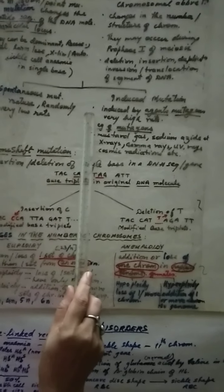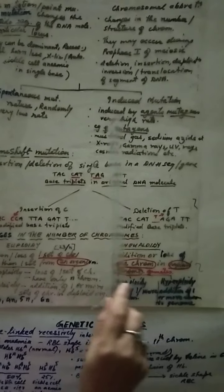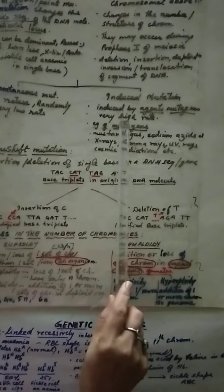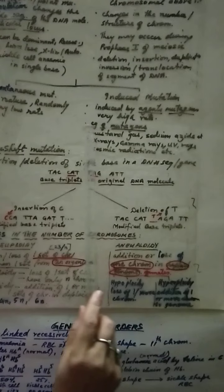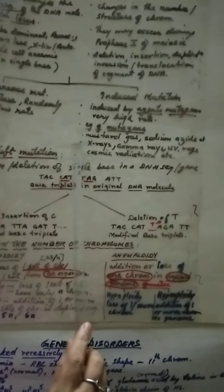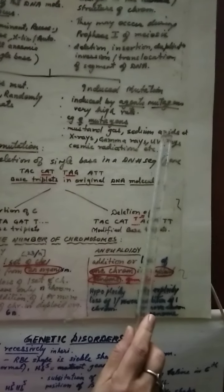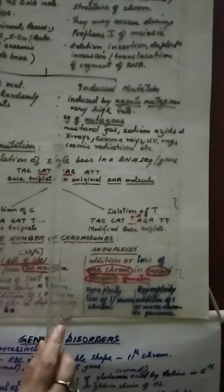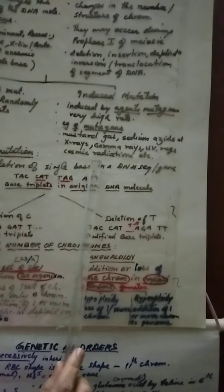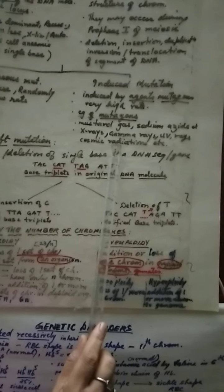What is induced mutation? Induced mutation is done by some agents we call them as mutagens. They are present at a very high rate also. And what are mutagen examples are usually asked in exam. So please learn mustard gas, sodium azide as well as x-rays, gamma rays, UV rays, cosmic radiation. All are mutagens which may cause mutation.